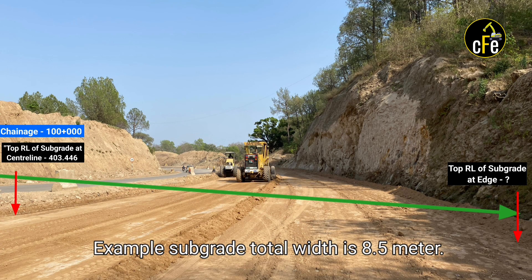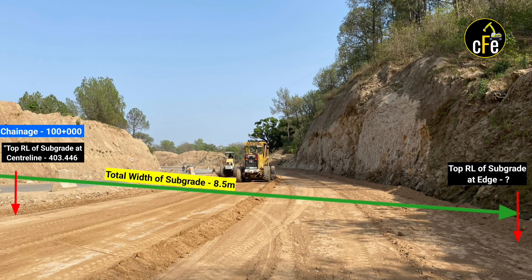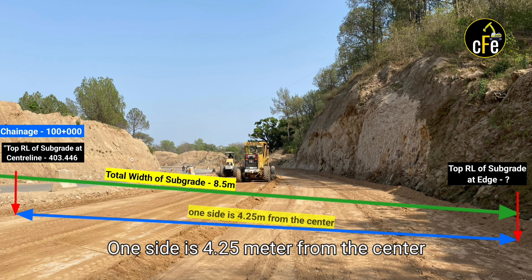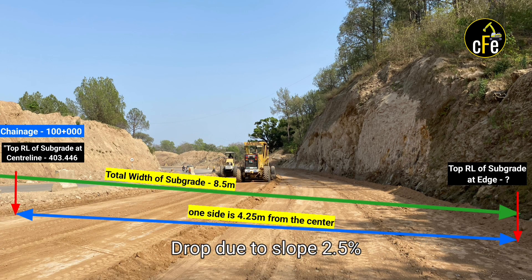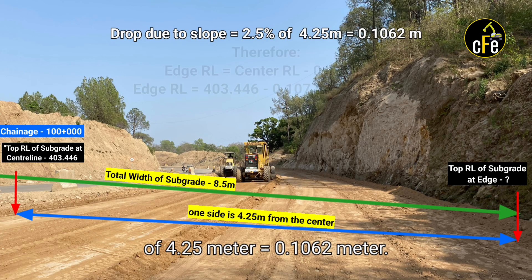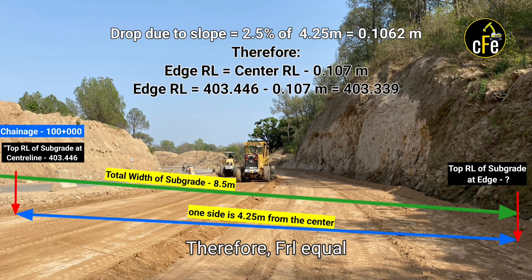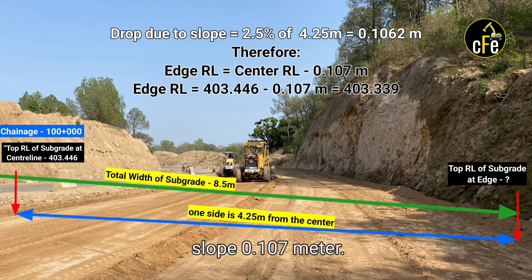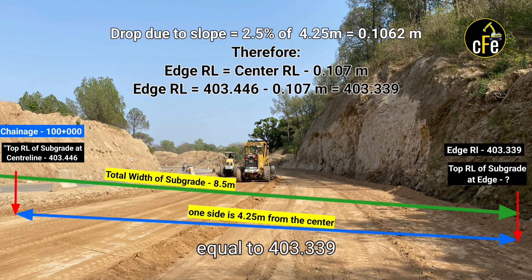For example, if the subgrade total width is 8.5 m, then one side is 4.25 m from the center. The drop due to 2.5% slope over 4.25 m = 0.1062 m. Therefore, the edge subgrade RL = 403.446 − 0.107 = 403.339 m.